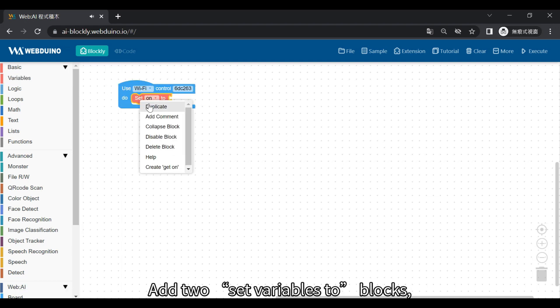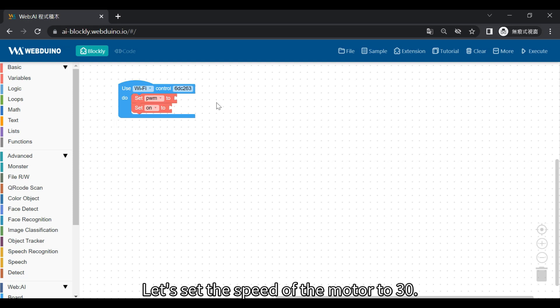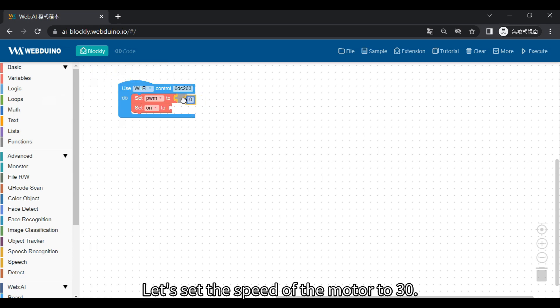Add two set variables to blocks. One should be ON and the other is PWM. Let's set the speed of the motor to 30. Change this here, 0 to 30. Copy the block and then change the value to 0. These two values are set first.